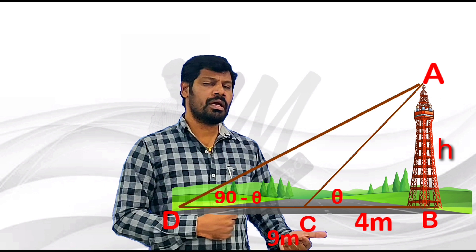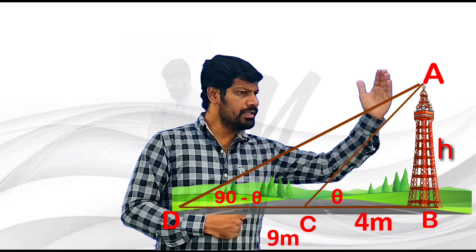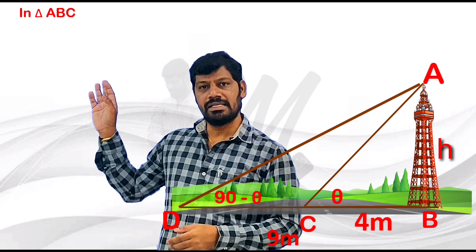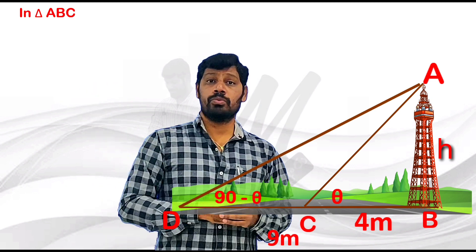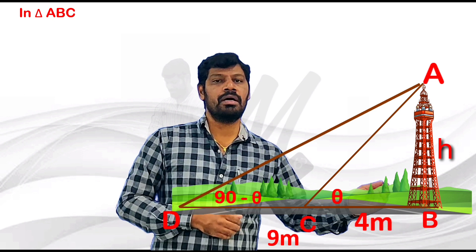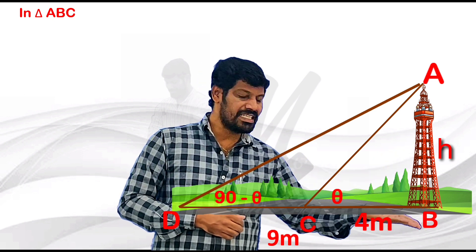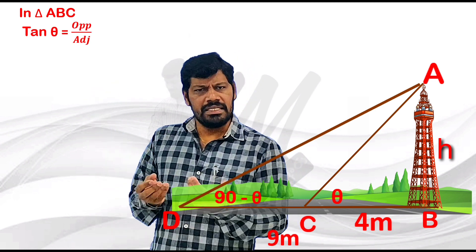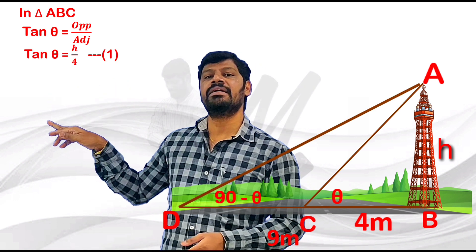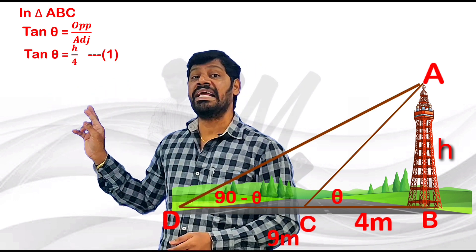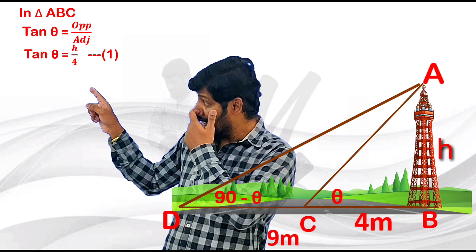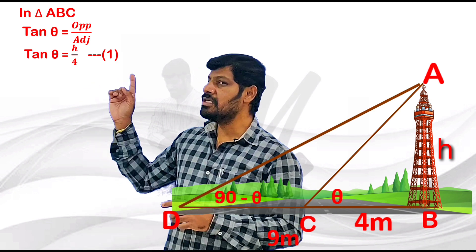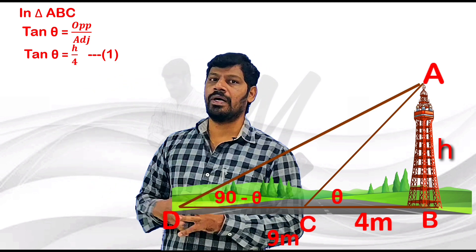Let me start with triangle ABC. In triangle ABC, this is theta. Tan theta is equal to opposite by adjacent. Tan theta equals H by 4. This becomes Equation 1: tan theta = H by 4.